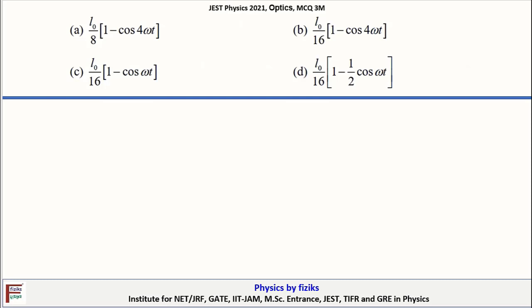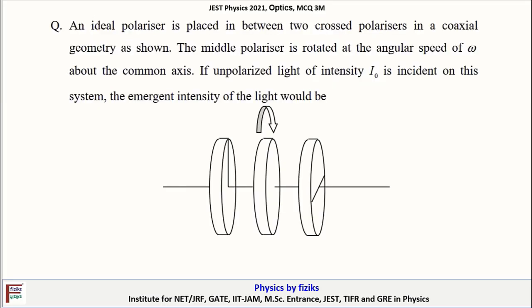We are having I0/16*(1 - cos 4ωt), I0/8*cos²(ωt), I0/16*(1 - cos 2ωt). Let us check it out. If here intensity is I0, emerging from P1, the intensity of emergent would be, and it is rotated at an angle θ, and θ is defined as ωt. The intensity coming out P1 would be I0/2.